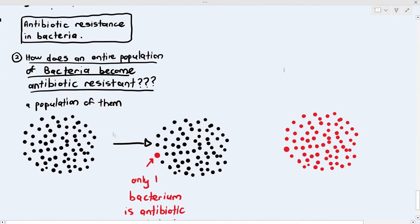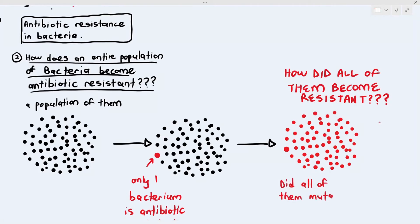My question is: how did all of them become resistant? Some students say all of them mutated and perfectly mutated to become resistant. But mutation is not guaranteed — it's a random thing. If a thousand bacteria mutate at the same time, perhaps only one becomes antibiotic resistant. Everything that mutates will not definitely become resistant. It's random, and if the bacterium is lucky, it will develop resistance.